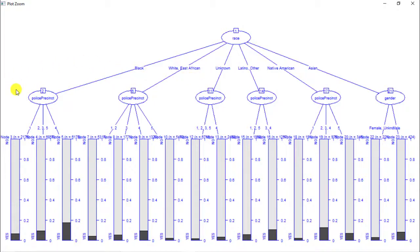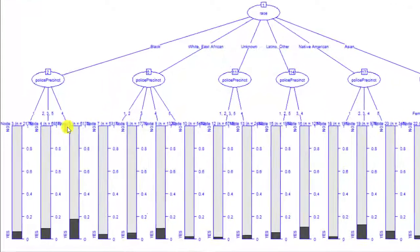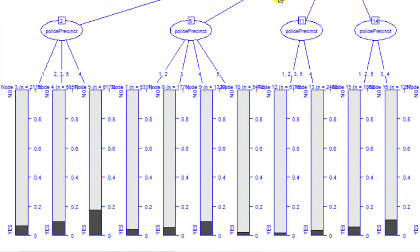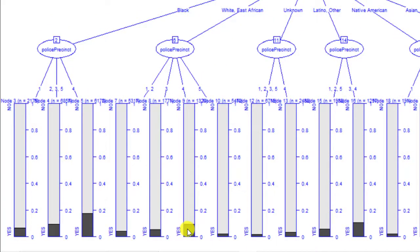I think it's also important to notice the police precinct patterns. Looking at Black, White/East African, and Unknown groups, we consistently see the fourth precinct appearing. It is clearly in this part of town where people are far more likely to have their vehicles searched. This can be due to many reasons, and from a social and public policy perspective, I would try to understand why people from this precinct are having their vehicles searched more often.